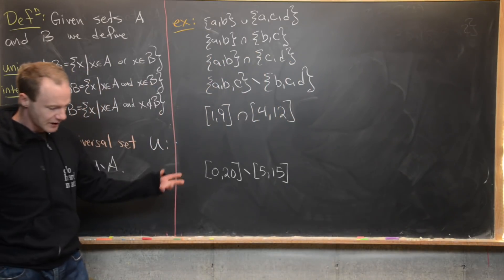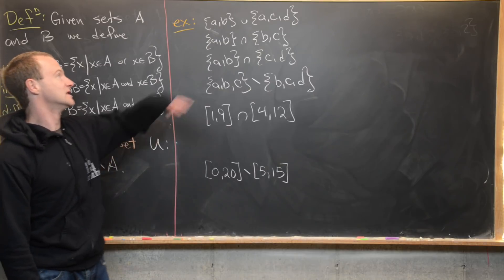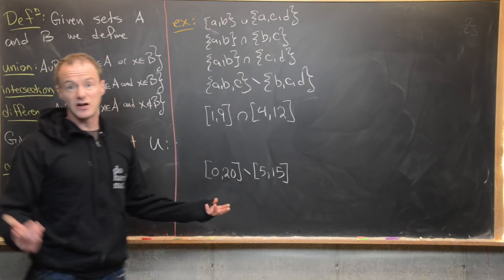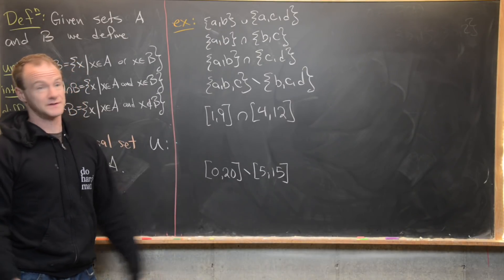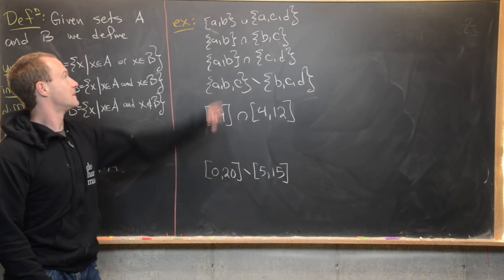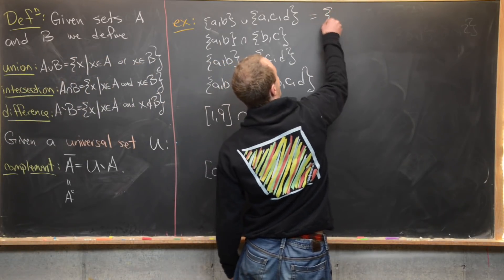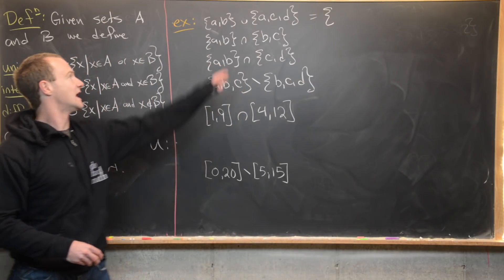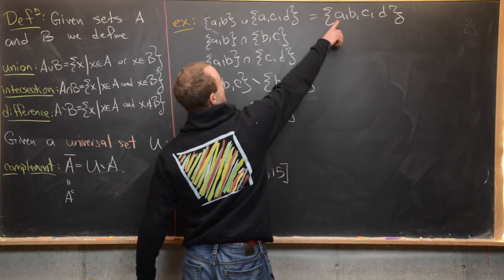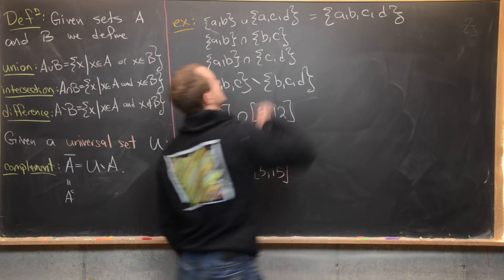Let's look at some examples. Suppose A, B, C, and D are all distinct objects — they don't even have to be the same type. For the union of {A, B} with {A, C, D}, we list all elements in either set: we get A, B, C, D. A is in both sets (which is fine), B is in the first, and C and D are in the second. For the intersection of {A, B} and {A, C, D}, we look for elements in both sets — that's just the element A.